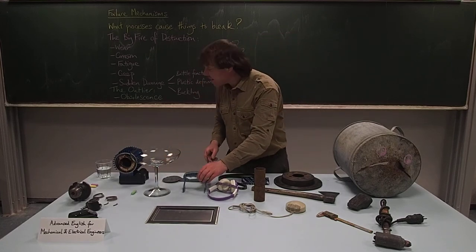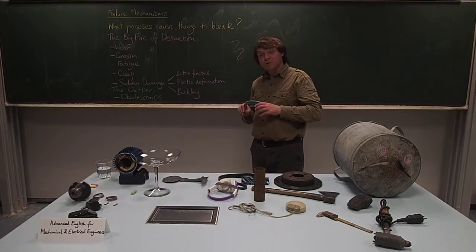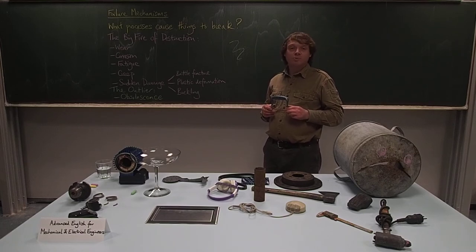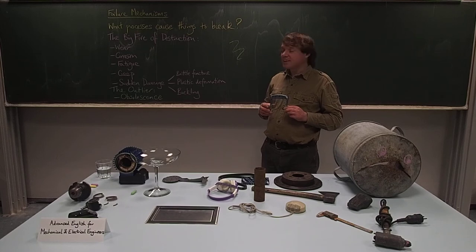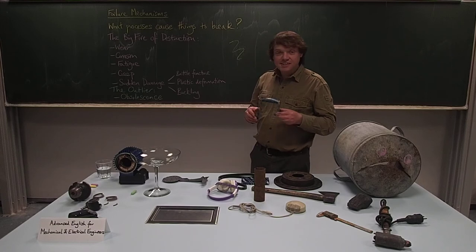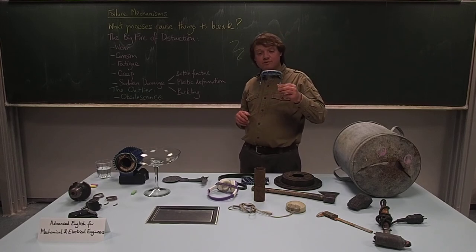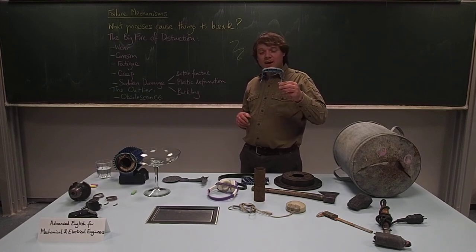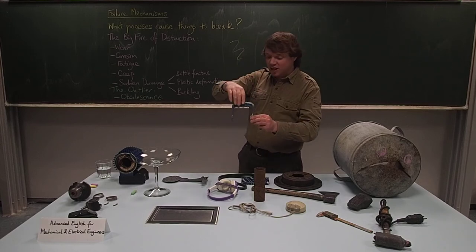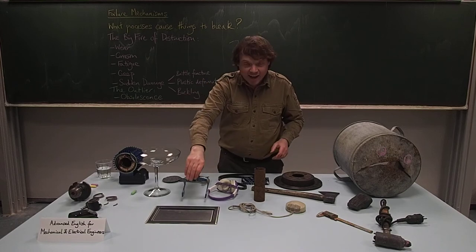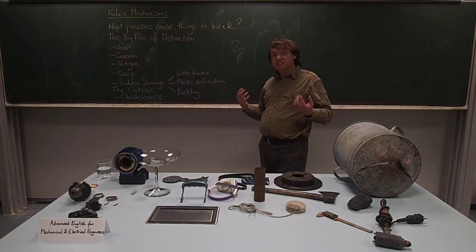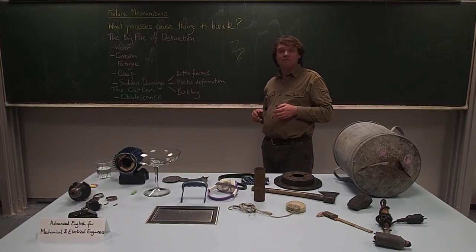The second category of sudden damage is plastic deformation. When something is overloaded, it deforms permanently into a new shape, but it does so suddenly rather than through the slow creep process. This is a handle from a drilling machine that fell a couple of meters onto the floor. You can see the legs of the handle are no longer vertical but bent over to the side. However, it hasn't actually broken — it can still be used as a handle. From the point of view of the engineer, you'd think of that as a fairly good result.